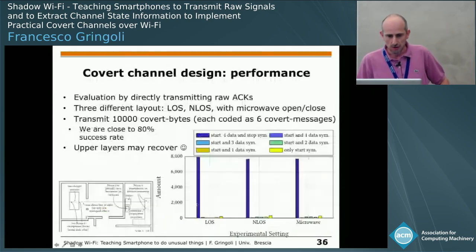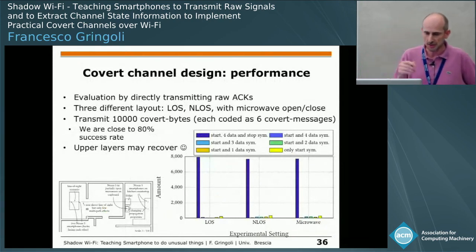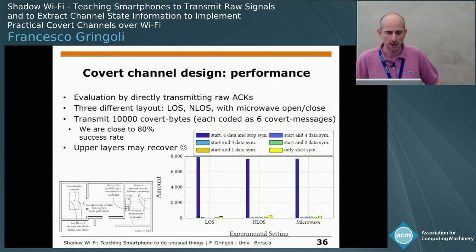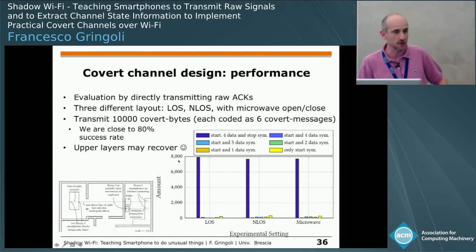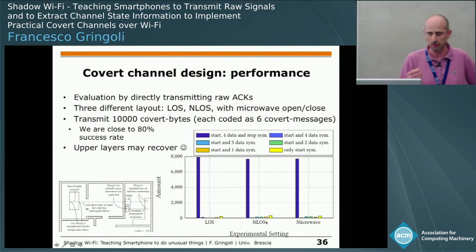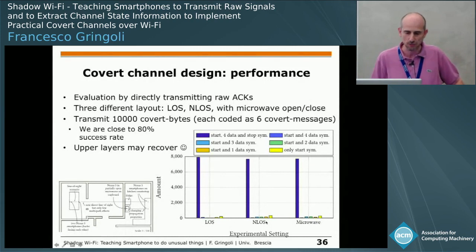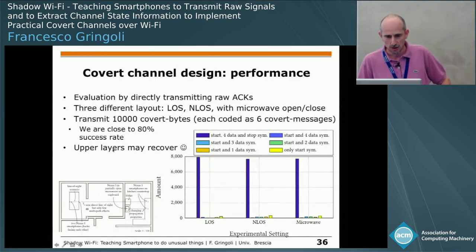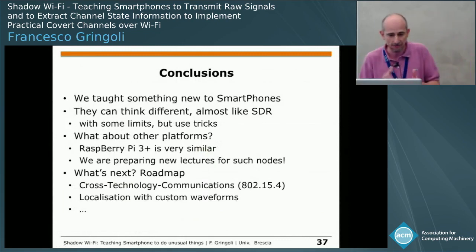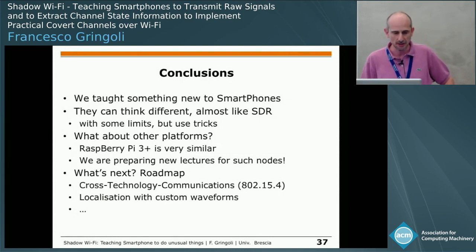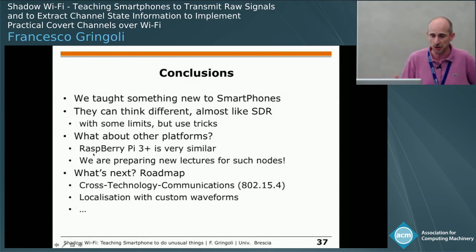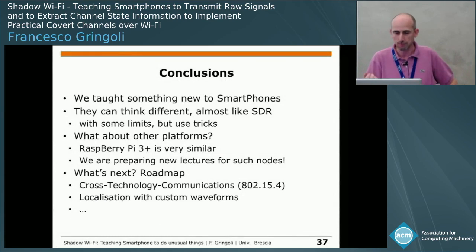For performance, we transmitted covert bytes broken into multiple covert messages. Out of 10,000 transmissions, we successfully received almost 80% in various conditions including line-of-sight, non-line-of-sight, and with the smartphone inside the microwave oven. The 20% losses can be addressed by upper-layer recovery schemes. In conclusion, we taught smartphones to work almost like a software-defined radio with some limits. It was also very interesting to find that the Raspberry Pi 3+ has a very similar chipset, so these experiments can be reproduced on a very cheap platform.